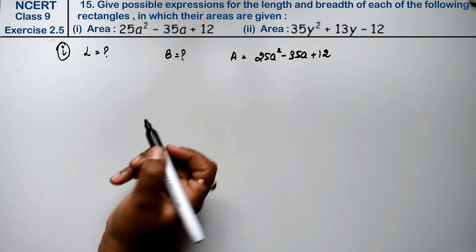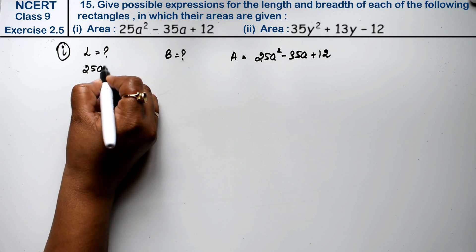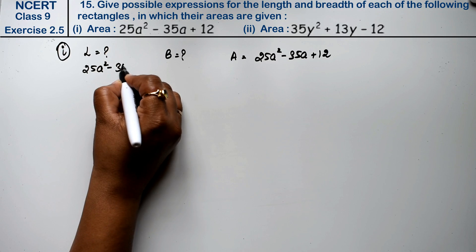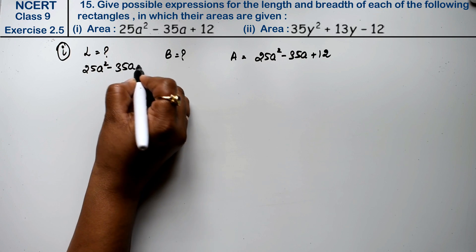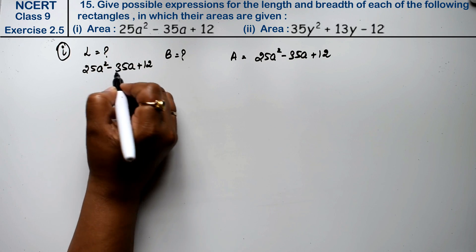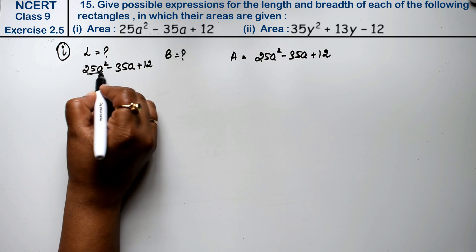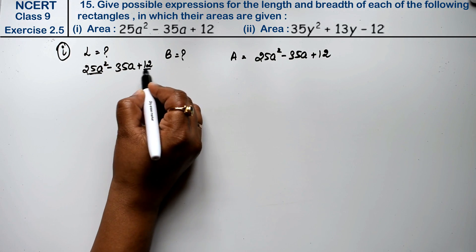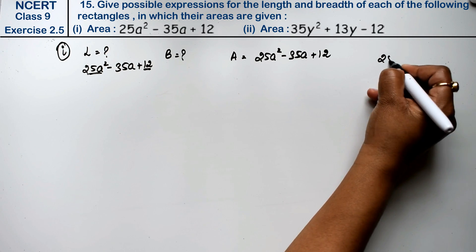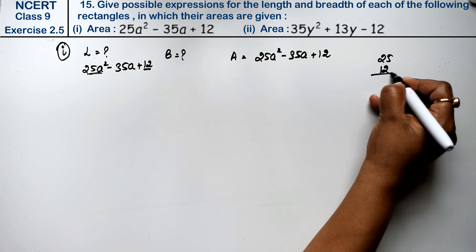I am writing this expression here: 25a² minus 35a plus 12. Now, nothing is common, so we will use the splitting method. We will multiply the coefficient of a² with the constant: 25 into 12. We need to factorize to find two values that we can use for length and breadth.